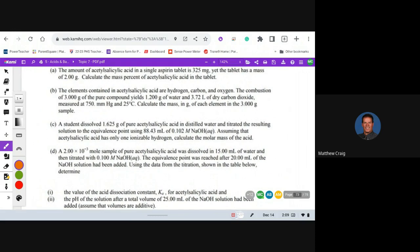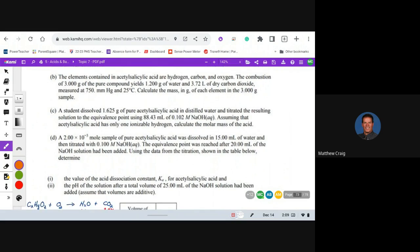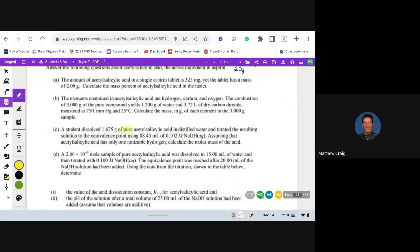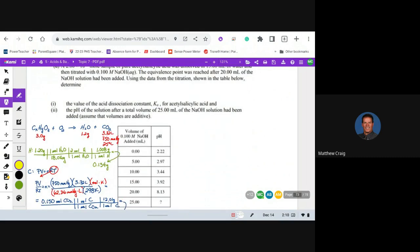Part C: a student dissolved 1.625 grams of pure acid in distilled water and titrated the resulting solution to the equivalence point using 88.43 milliliters of 0.102 molar sodium hydroxide. Assuming that the acid has only one ionizable hydrogen, in other words it's monoprotic, calculate the molar mass of the acid. Let's go. I didn't see that word pure, thank God that word's there. What does that mean? Nothing but the acid. This is another gift from the chemistry gods.